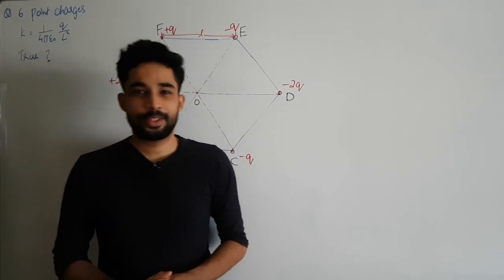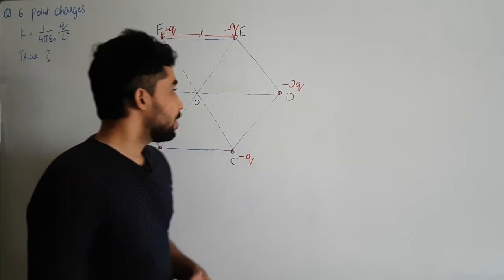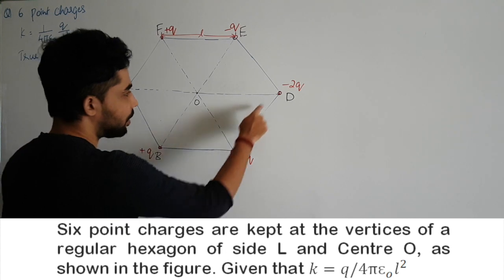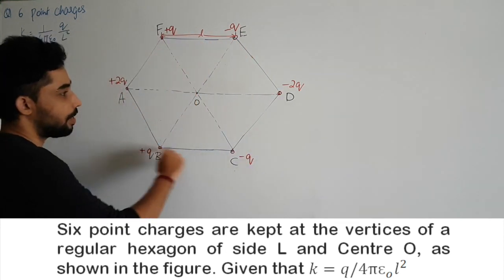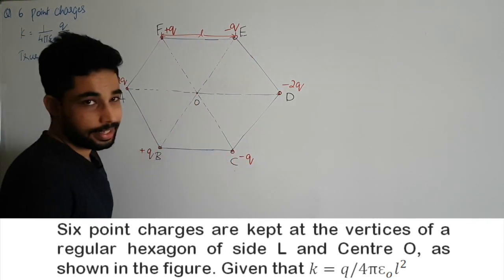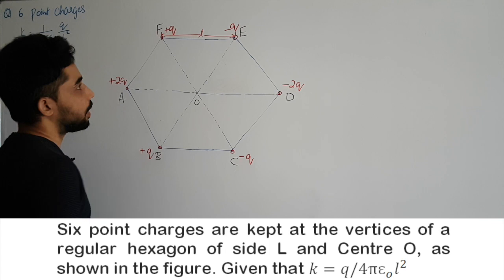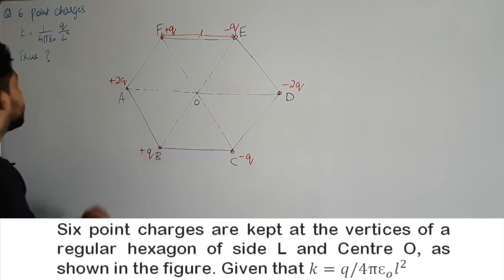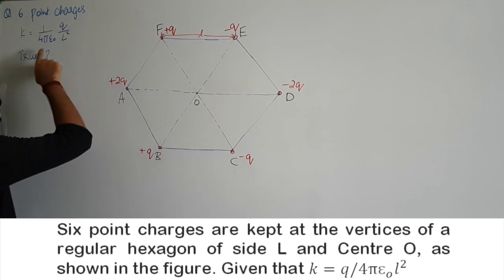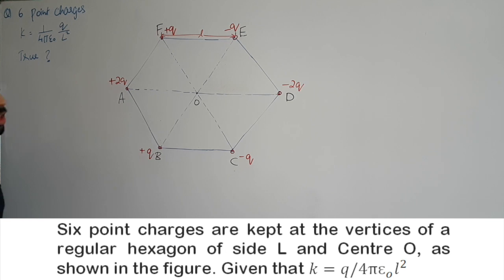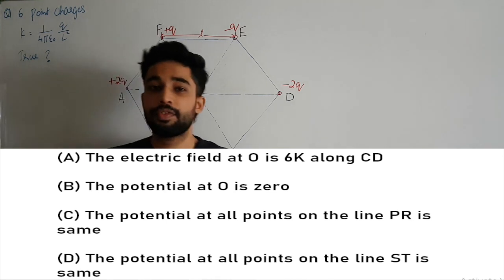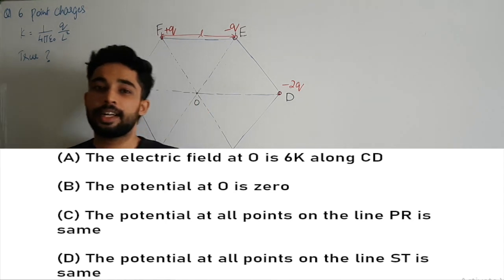Hello everyone, welcome back to another video. In this question we have charges kept at the vertices of a regular hexagon. The length of the hexagon is given as L, and we are told to take k as 1 by 4 pi epsilon naught times q by L squared. Some statements are given and we need to determine which are true.